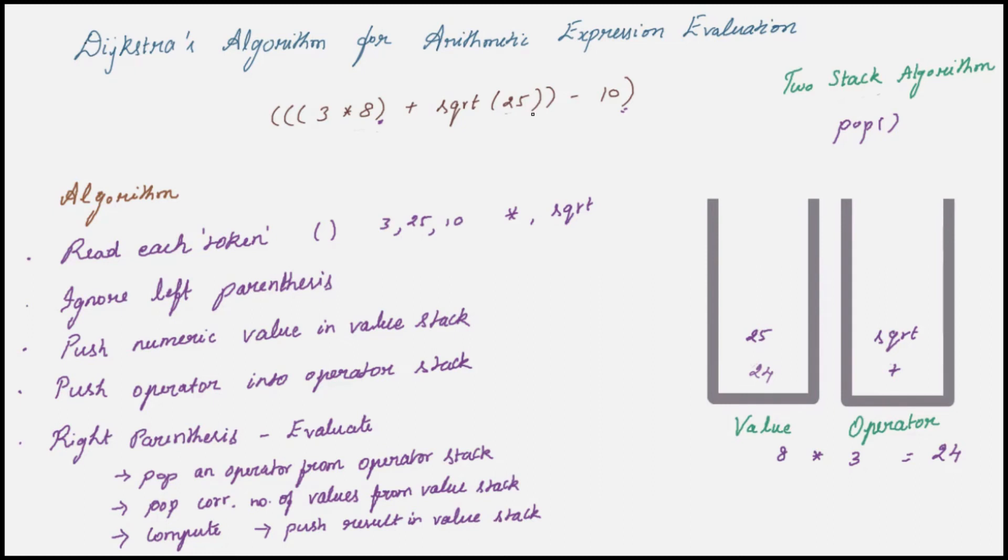The next token is a right parenthesis. So just pop one value. Now compute the value: square root of 25 is 5. Push the result into the value stack.